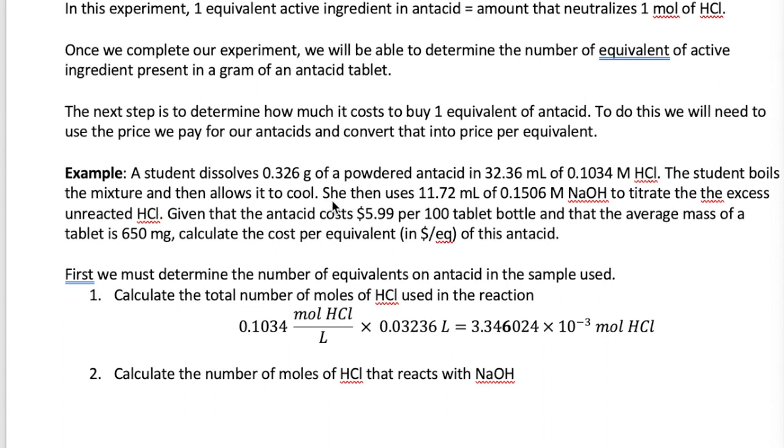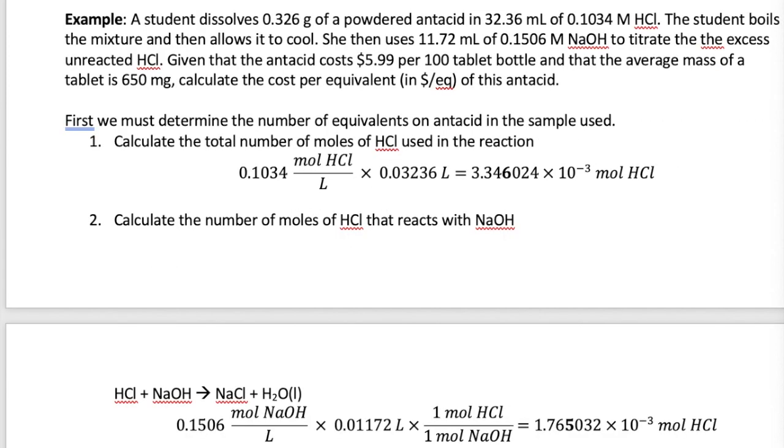Let's work this out in an example. So here, a student reacts 0.326 grams of antacid with excess HCl, and then the remaining HCl is neutralized by NaOH. We're given the cost information and asked to calculate the cost per equivalent of the antacid. So we first have to calculate the number of equivalent of the active ingredient. Remember that this can be done by taking the difference between the total HCl that's used and the HCl that is neutralized by NaOH.